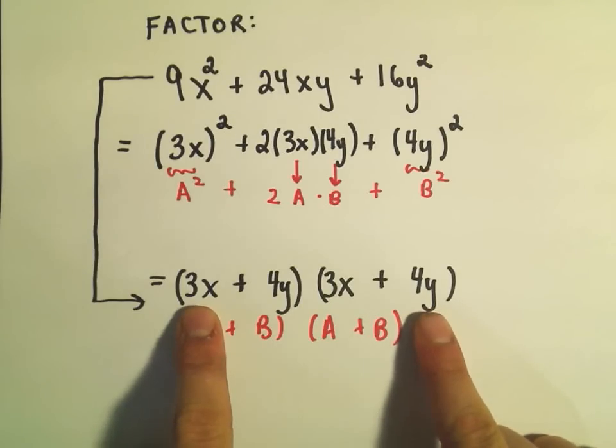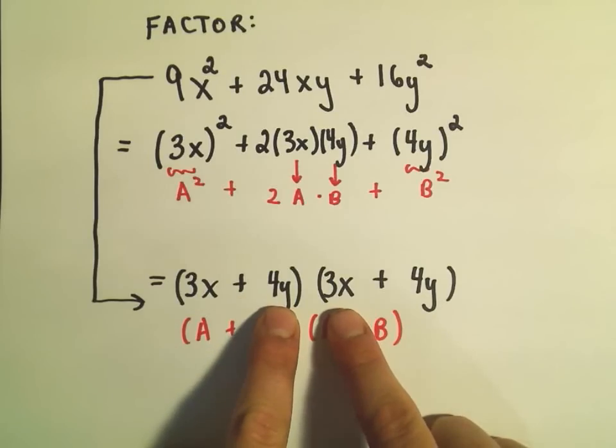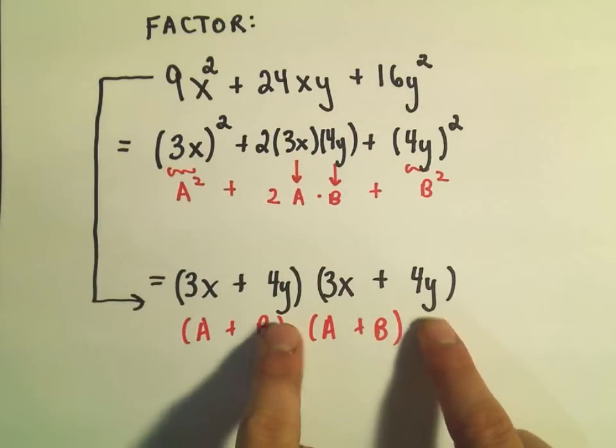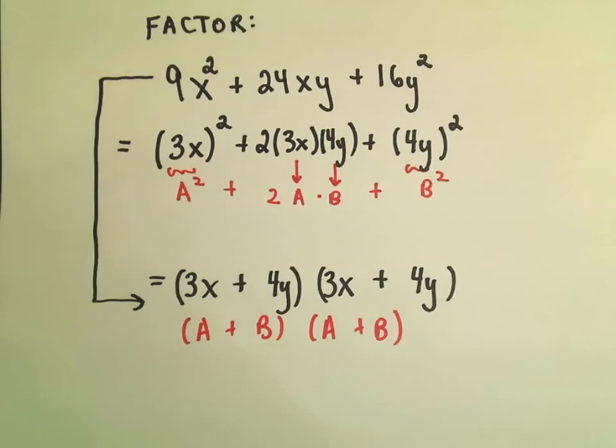On the inside, we'll get another 12xy, which gives us our 24xy. And then on the outside, we have our 16y squared. So we're done.